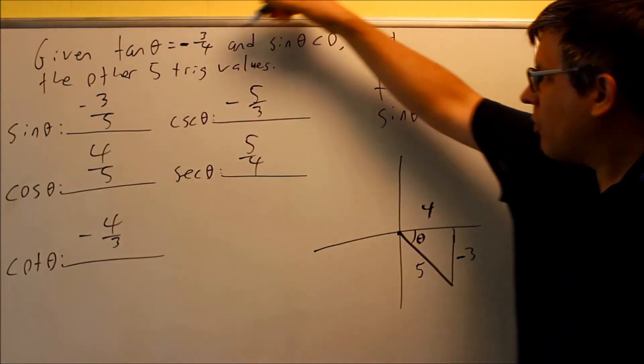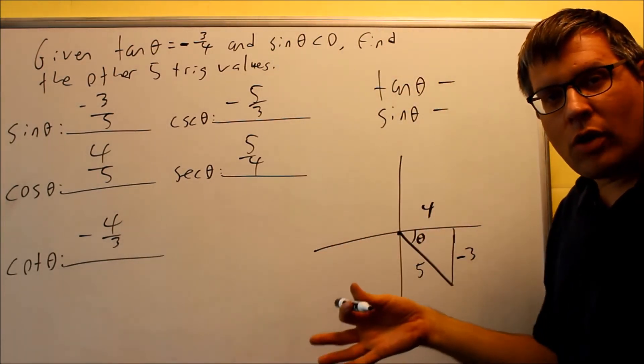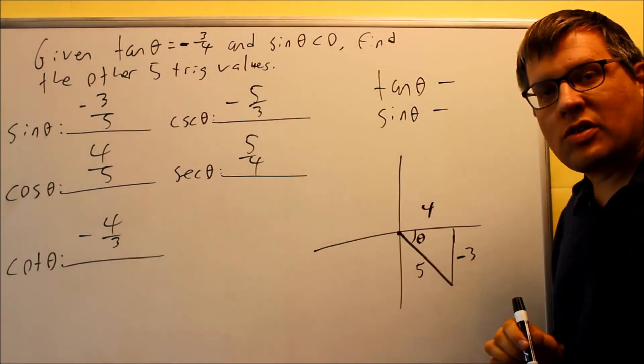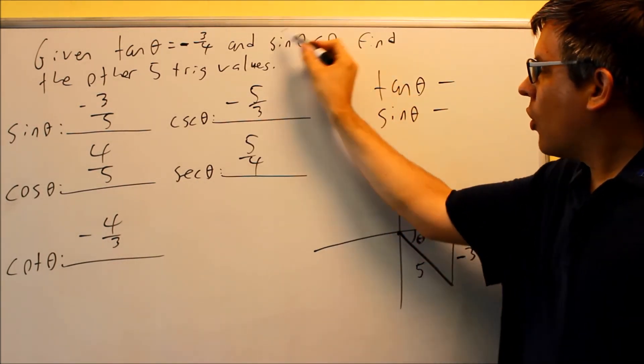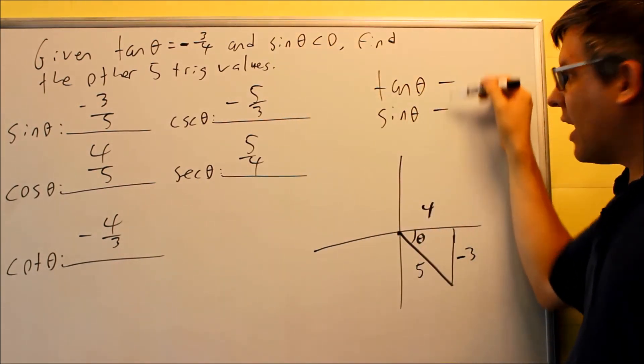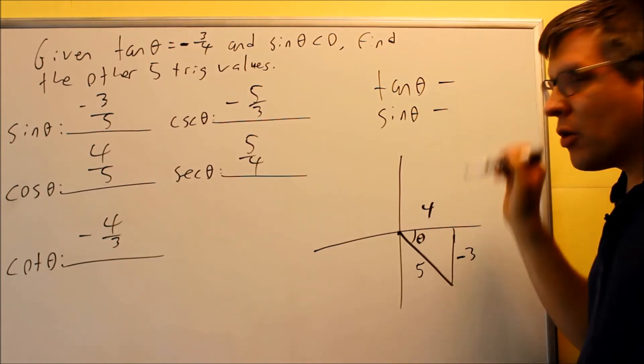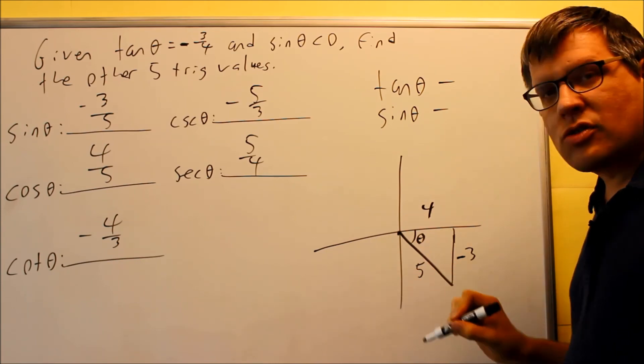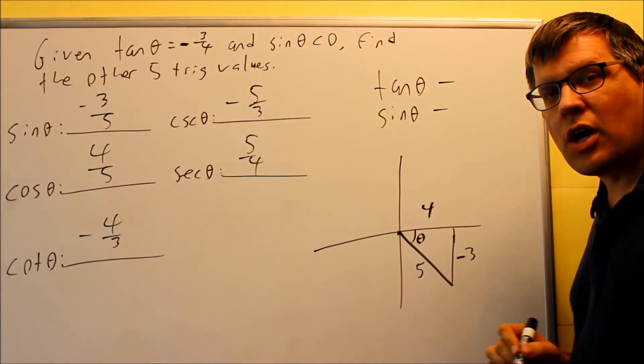So again, this information they give you, sometimes instead of giving you this, they may actually tell you right away which quadrant it's in. But for the ones that don't tell you which quadrant it's in, this is how you have to look at it. You want to look at the signs for both of those, and from that, determined by 'All Students Take Calculus' which quadrant it's in. That's the most important thing when you're setting these problems up.